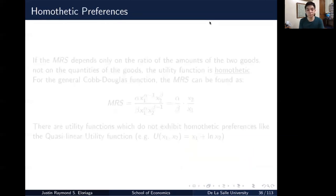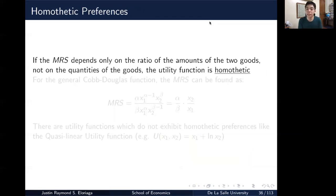So that's the case of a particular special indifference curve. The next one, which is on our agenda, is on homothetic preferences. So essentially this is just some sort of property of the marginal rate of substitution, which states that the MRS.